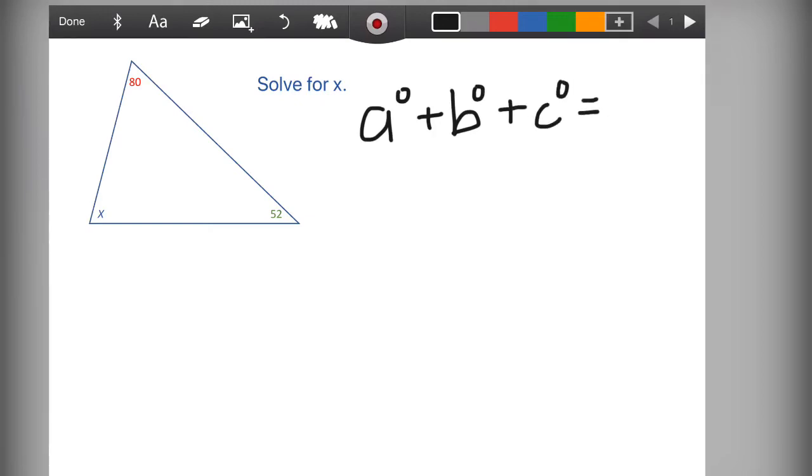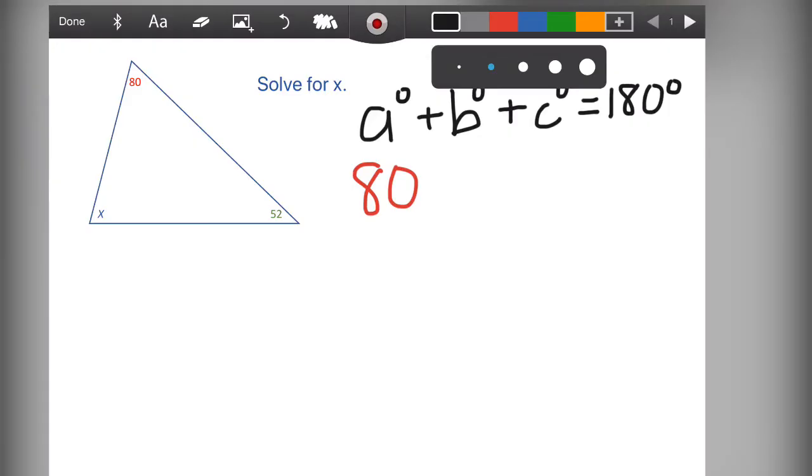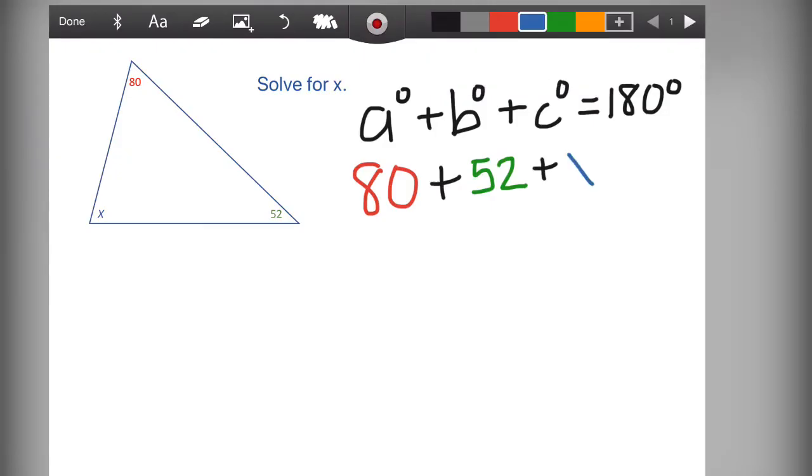We are going to solve for X by using the triangle sum theorem. Angle A plus angle B plus angle C equals 180 degrees. First I am going to fill in everything we know. We know the 80. We know the angle of 52. And we know the last angle is represented by the letter X, because it's unknown. We will still set that all equal to 180 degrees. Now we are going to combine the like terms. 80 and 52 can be combined to give us 132.